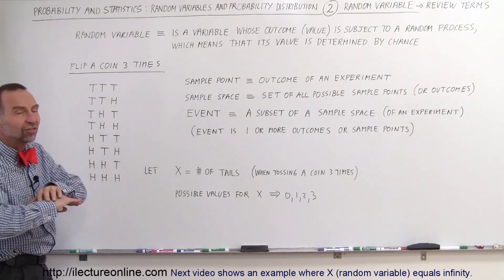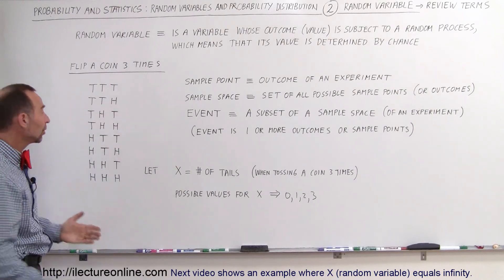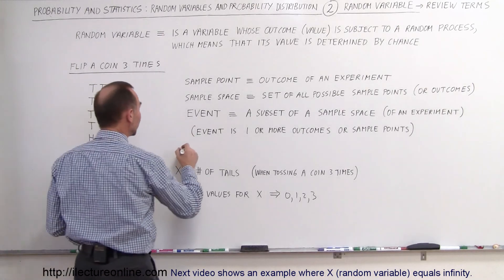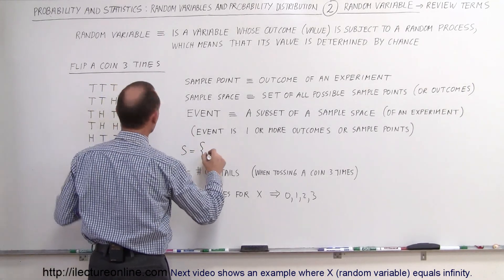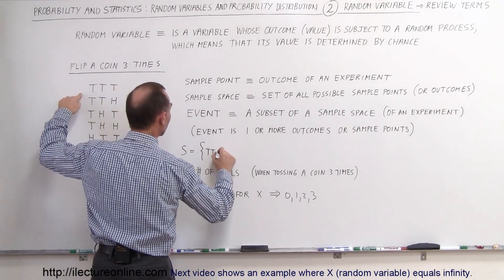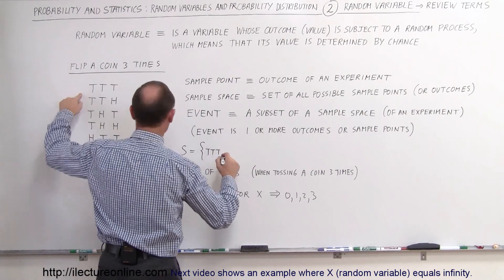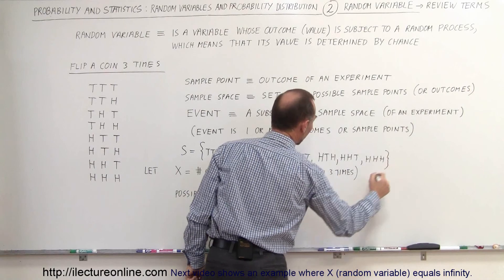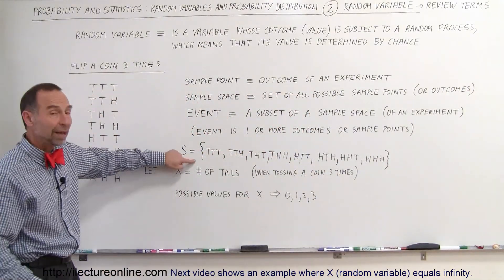A sample space is the set of all possible sample points. In other words, all of these together will form the sample space. So the way we write sample space is S equals, and we put in all the possible sample points or outcomes. So tail, tail, tail, head, head, and there you go. That would be what's considered the sample space.